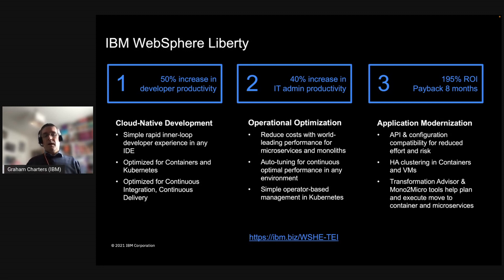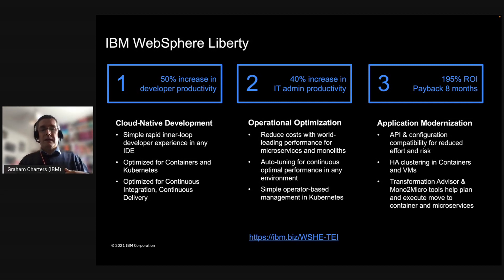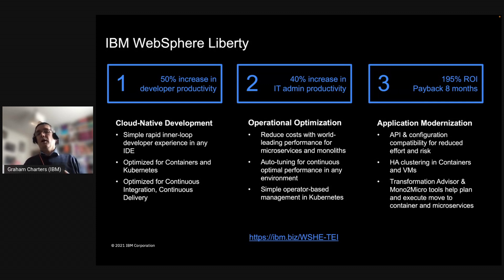Focusing specifically on Liberty, earlier last year we wanted to articulate the benefits of Liberty, so we commissioned an independent study from Forrester Research. Forrester interviewed a number of our customers, created a composite customer based on those interviews, and wrote a report. We're not responsible for the calculations and we don't influence the data or participate in the interviews. What they found in this Total Economic Impact study was that developers experienced a 50% increase in productivity when moving from traditional WebSphere to Liberty, IT admins achieved a 40% increase in productivity, and customers on average achieved a 195% return on investment with payback within eight months.